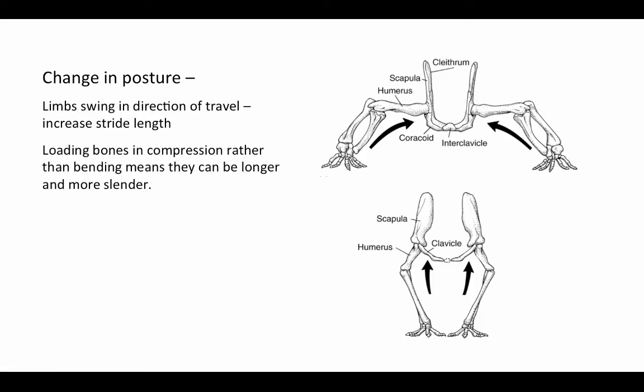This change in posture also loads the bones of the limb in compression rather than bending. Bone is strongest in compression, so it can withstand more compression force per unit of cross-sectional area than bending force. Placing these bones in compressive loading means they can become a lot longer and more slender and still have enough strength to withstand those compression loads.